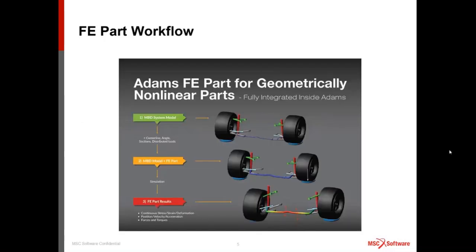In terms of workflow for building this, you define what the centerline is — the undeformed centerline position of the part you want — and then mesh it with a series of nodes and key points. At each of those points you define a section, and those cross sections define the area properties and area inertias that the formulation will use. Each section can be different, so you can have non-uniform cross sections and tapered cross sections.